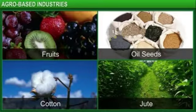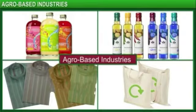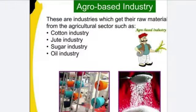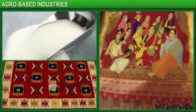Agricultural produce like fruits, oilseeds, cotton, jute, etc. act as a raw material for a number of manufacturing industries. The industries which get their raw material from the agricultural sector are known as agro-based industries. The sugar industry, silk and woolen textile industry are some examples.